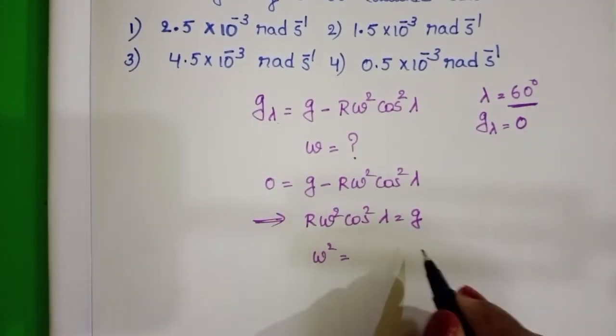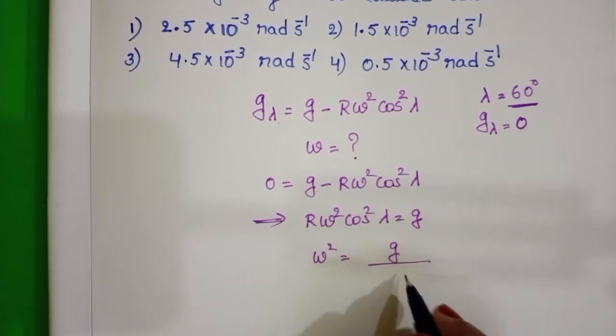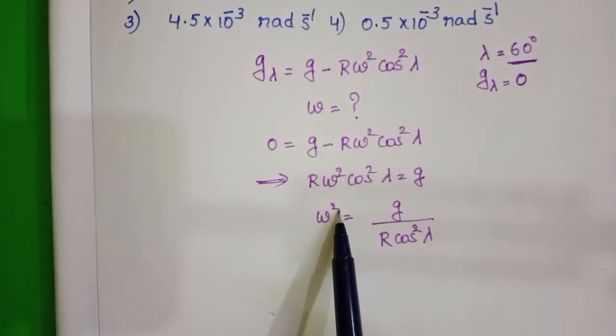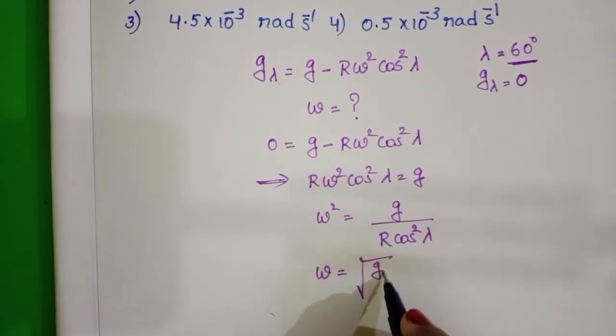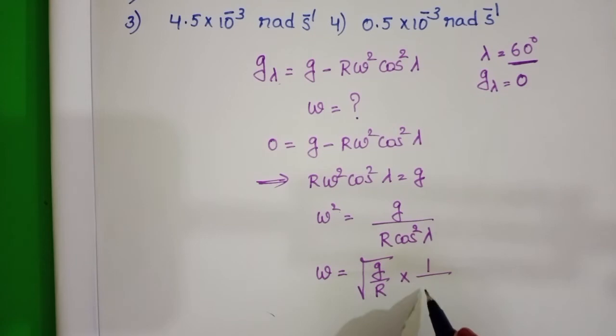Omega square equals to g by r cos square lambda. This square goes to the right side and becomes root. So square root of g by r into 1 by cos lambda.